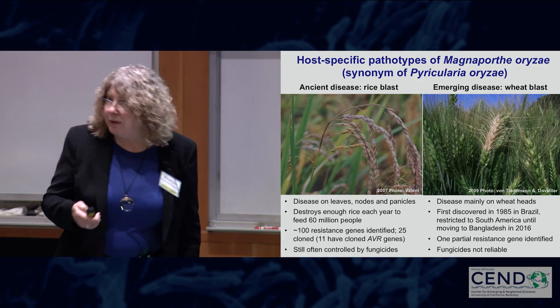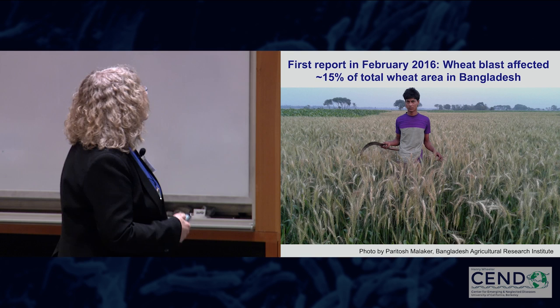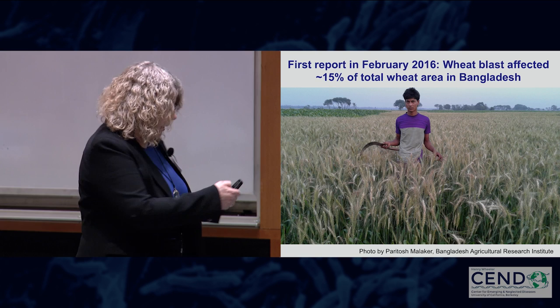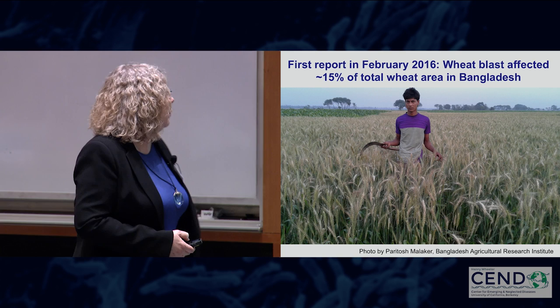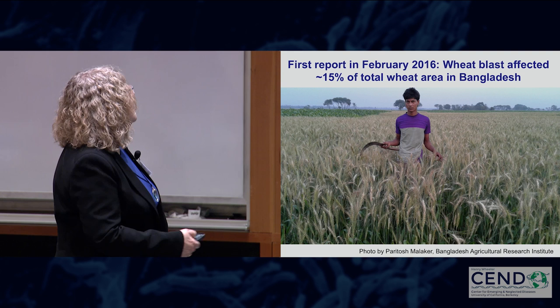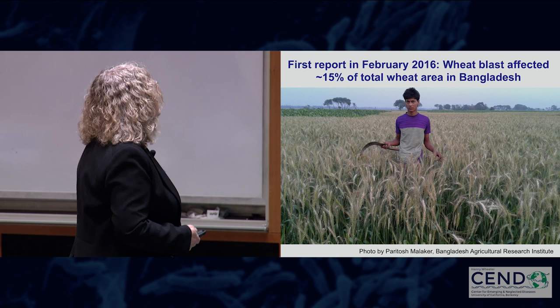This disease can surprise you. What you see here — if you're just glancing at this, you might think this is a maturing wheat field, but it's not. This should be green. These wheat heads just emerged from the boot and emerged infected with the blast fungus. The first report of this disease in Bangladesh resulted in 100 percent yield losses in lots of fields. As far as you can see, this field is blasted, and it affected about 15 percent of total production that year.